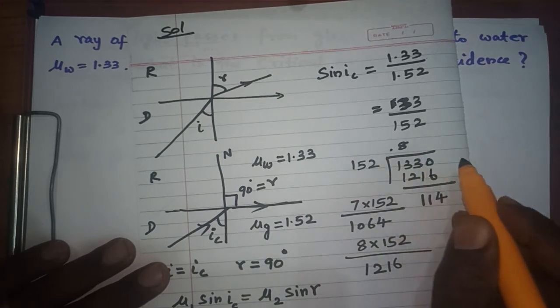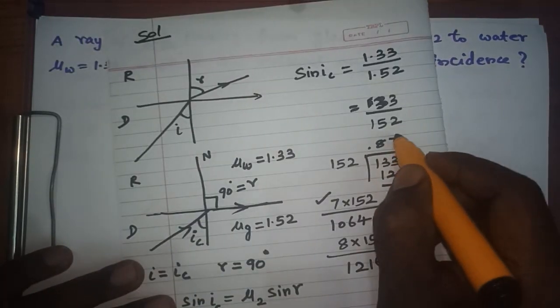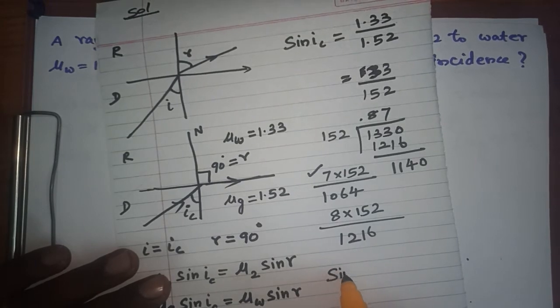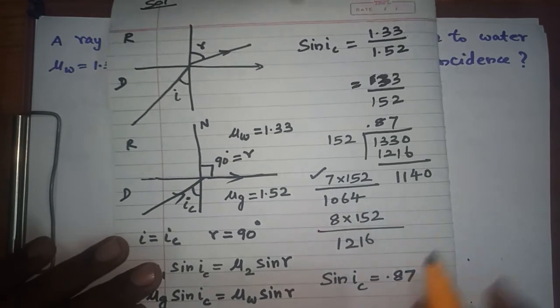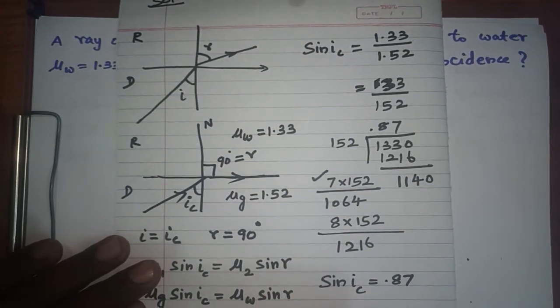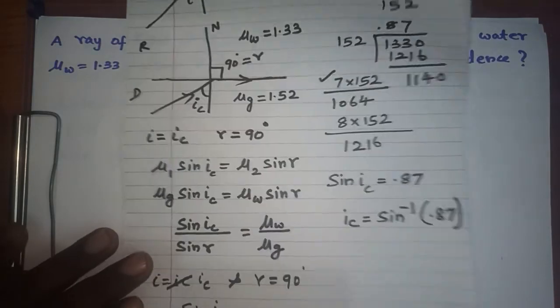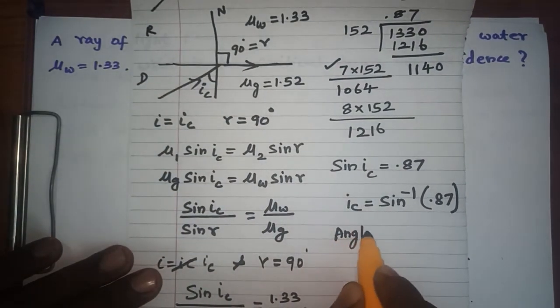You will get approximately 8 times for this, 7 times. So this is 0.87. My sin i_c equals 0.87. Then what is my i_c? i_c equals sin inverse of 0.87.